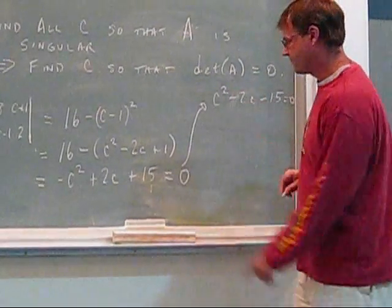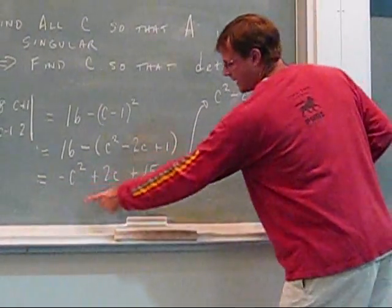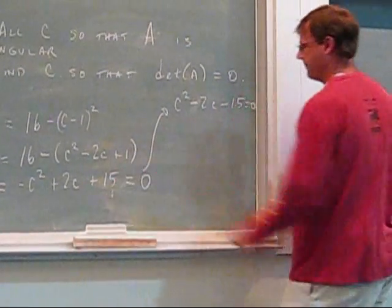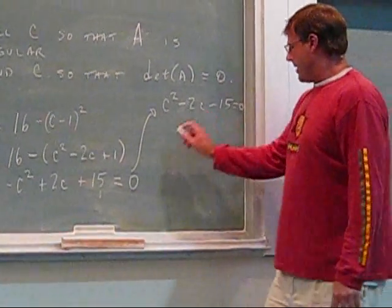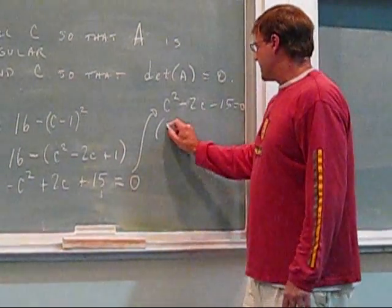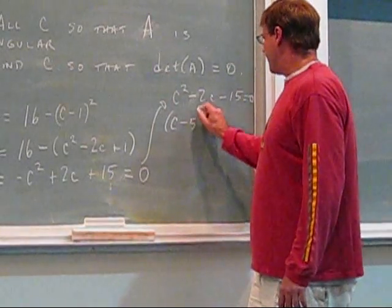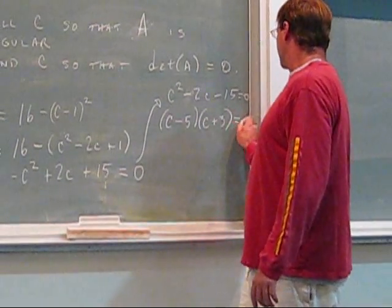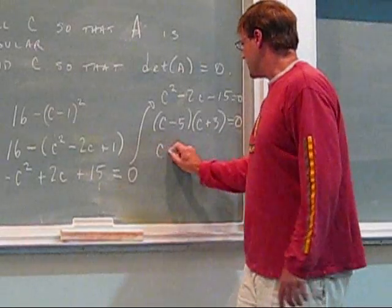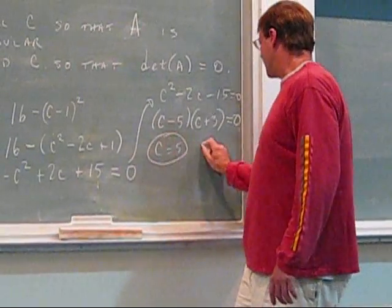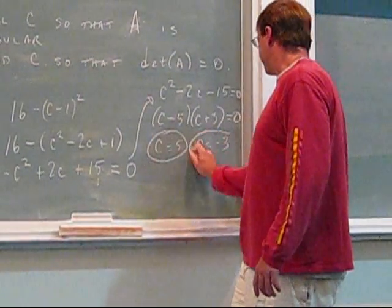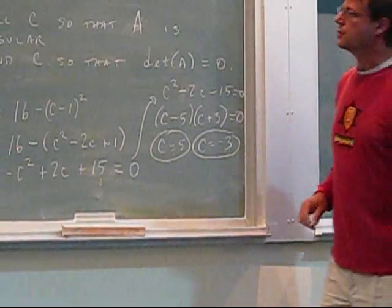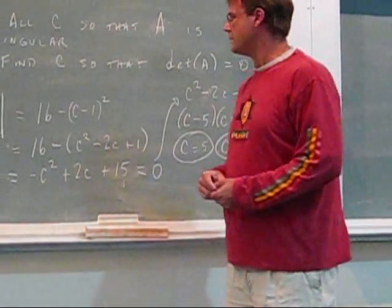This is a minus 2C. Subtracting everything over to the other side, we get C squared plus 2C minus 15 equals zero. Factoring this gives (C minus 5)(C plus 3) equals zero. So C equals five and C equals negative three — that's the solution for this problem.